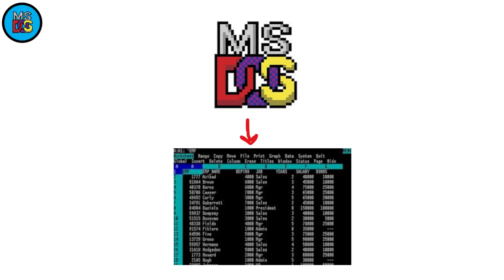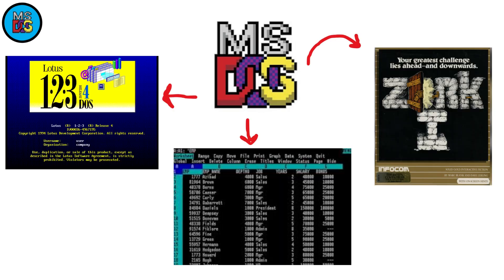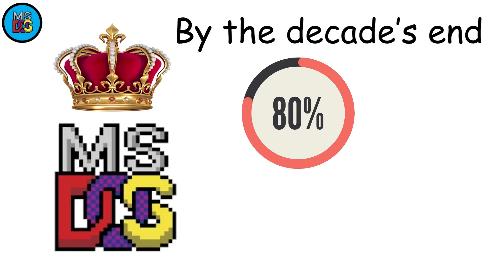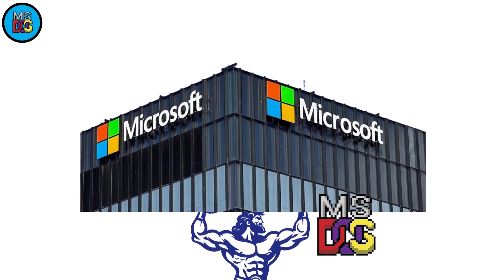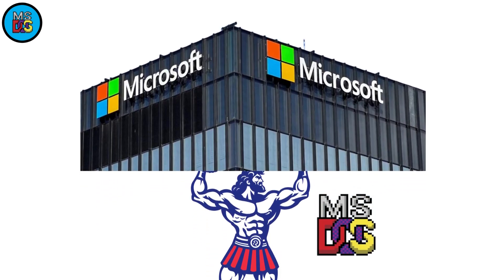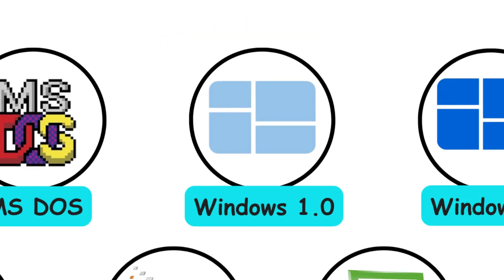It ran beloved programs like the spreadsheet giant Lotus 1-2-3 and adventure games like Zork. By the decade's end, MS-DOS dominated roughly 80% of the personal computer market, laying the groundwork for Microsoft's empire.